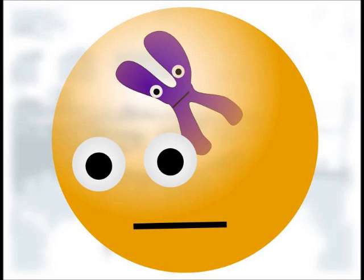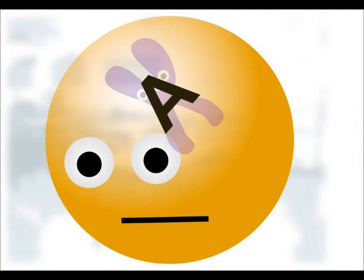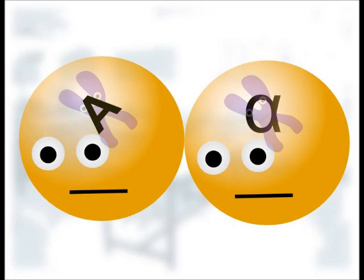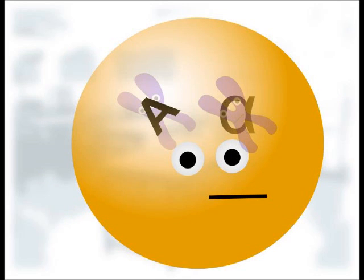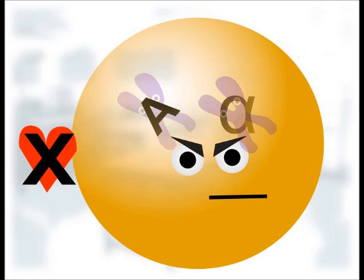The yeast have a gene on this chromosome called MAT, which can either be type A or type alpha. Type A cells can only mate with alpha, and alpha cells can only mate with type A. When they do mate, the cells fuse to form a diploid cell with both copies of chromosome 3. This cell has both copies of the MAT genes, which cancel out each other's effect, preventing this new cell from mating.